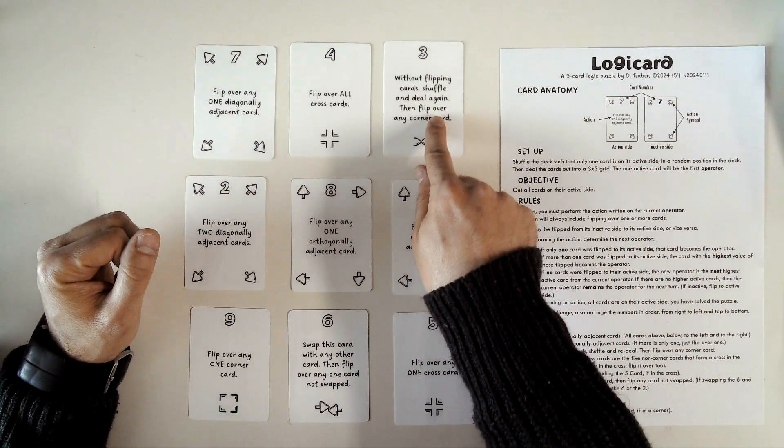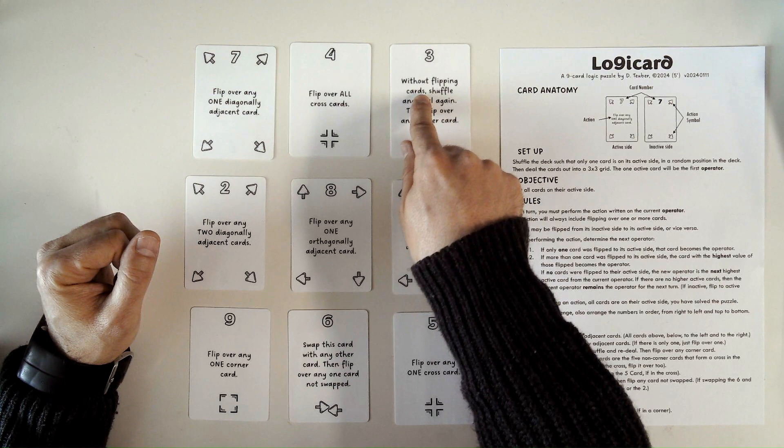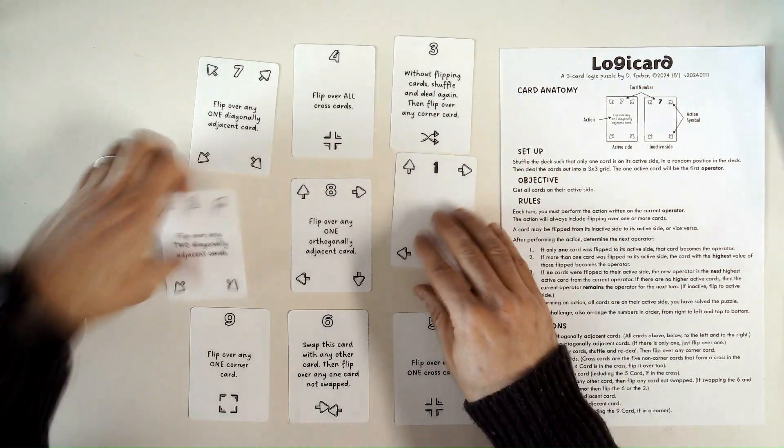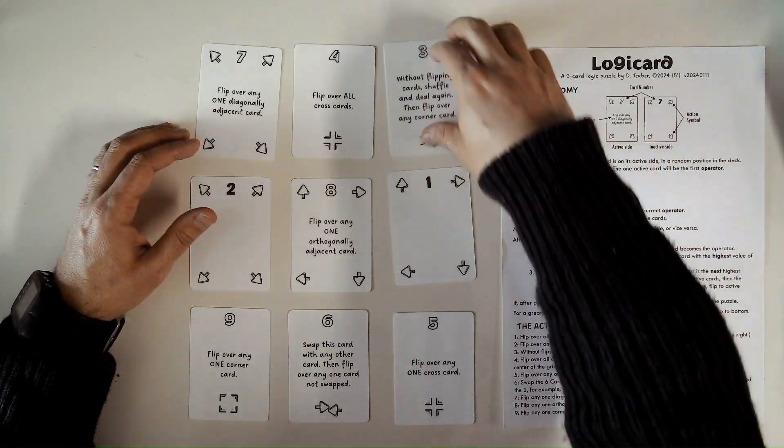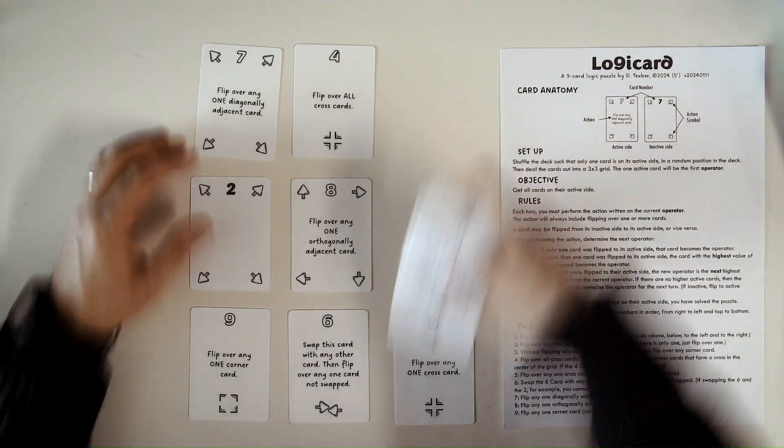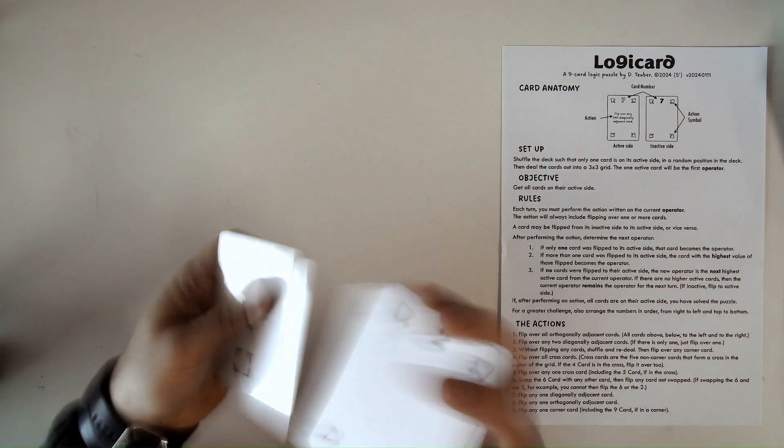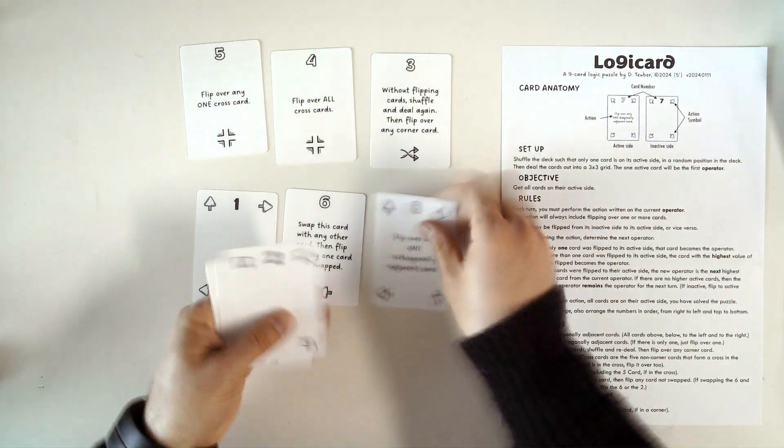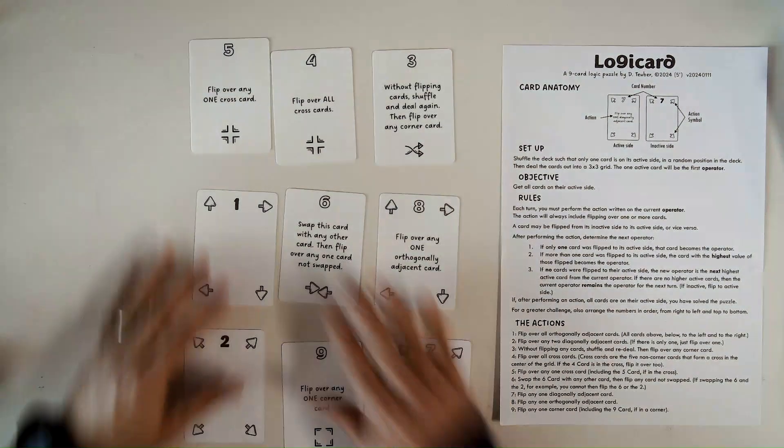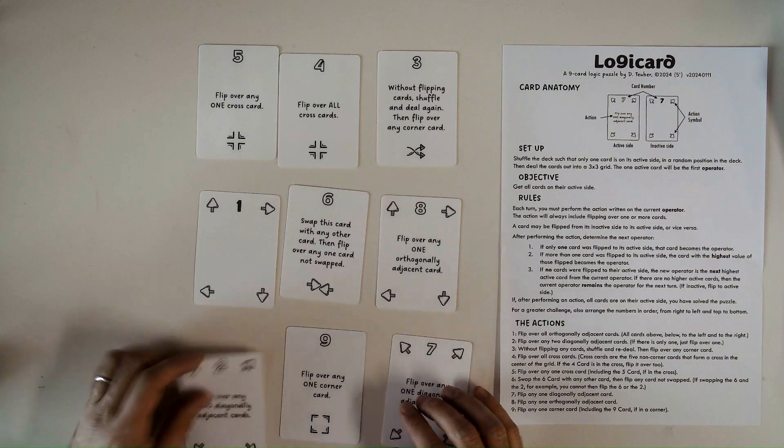And I didn't go through this one card, the 3, which is an unusual card. So let's just show you how that one works. So let's say we had something like this. And I'd flipped over the 3. So it says, without flipping the cards, you shuffle and deal again. So this kind of brings some unpredictability to the game. So you just shuffle everything up. You keep the cards flipped in the same way. So be careful when you shuffle that you're not flipping them over. And then you do something like this. And then you can flip over any corner card to end the turn. So I can do something like that and flip that over.